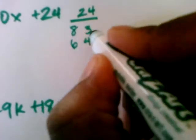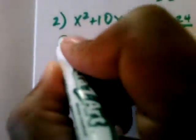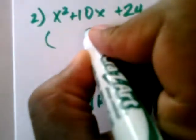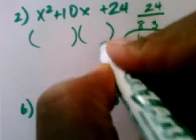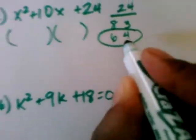If I add the 8 and the 3 together, I get 11. If I add 6 and 4 together, I get 10. So I'm going to select the 6 and 4. And so I'm going to create my double bubble. And I'm going to have x plus 6 times the quantity of x plus 4.